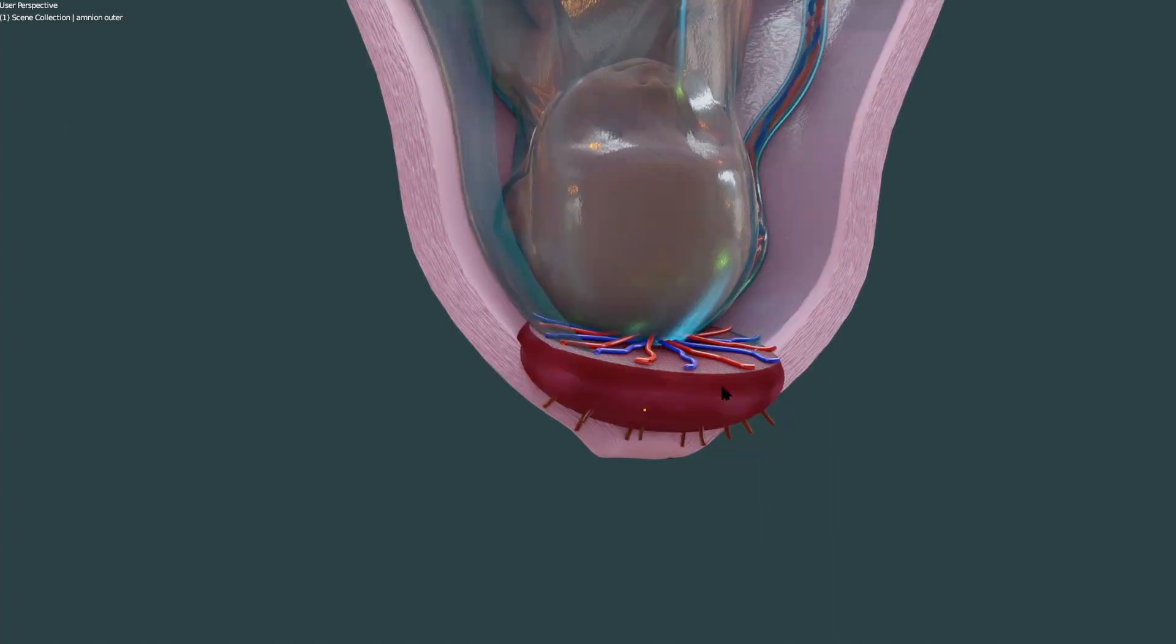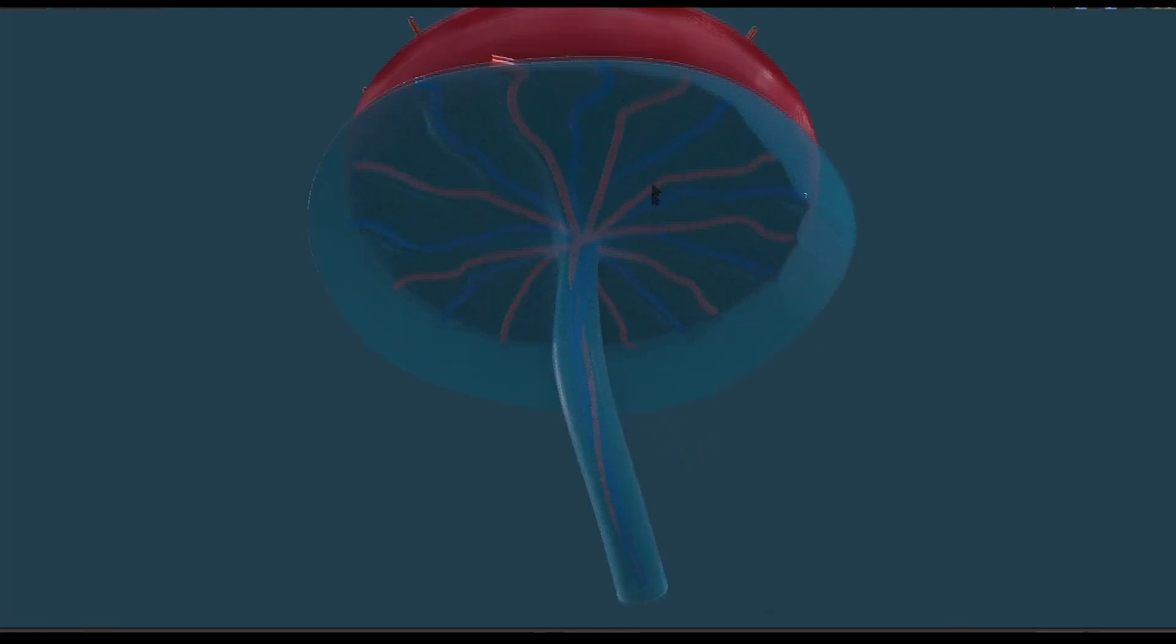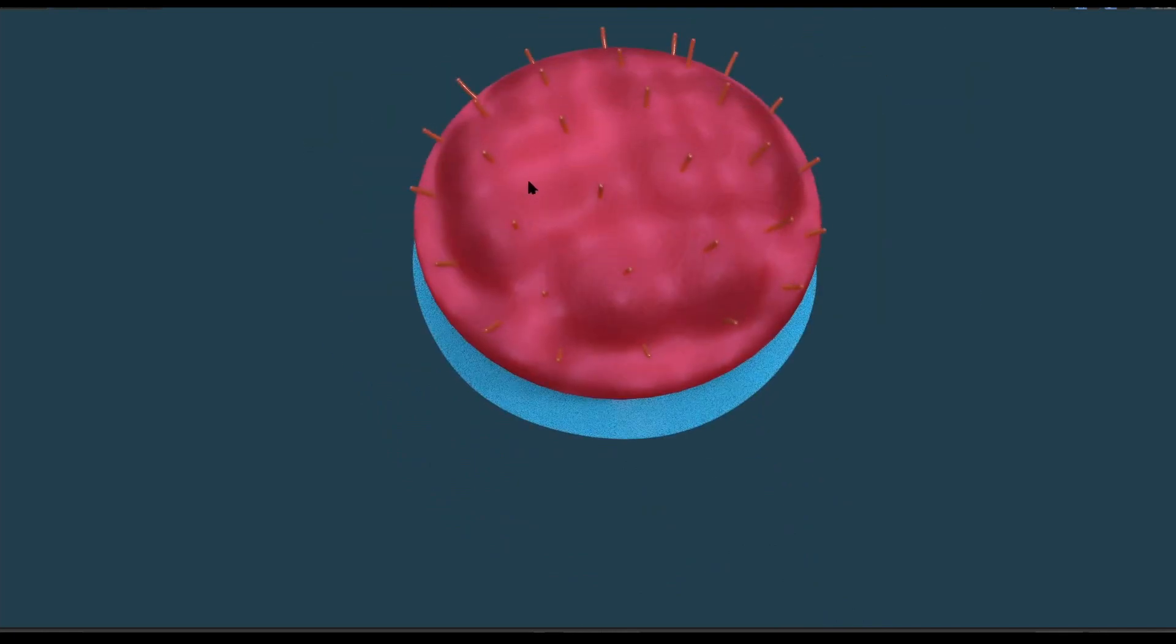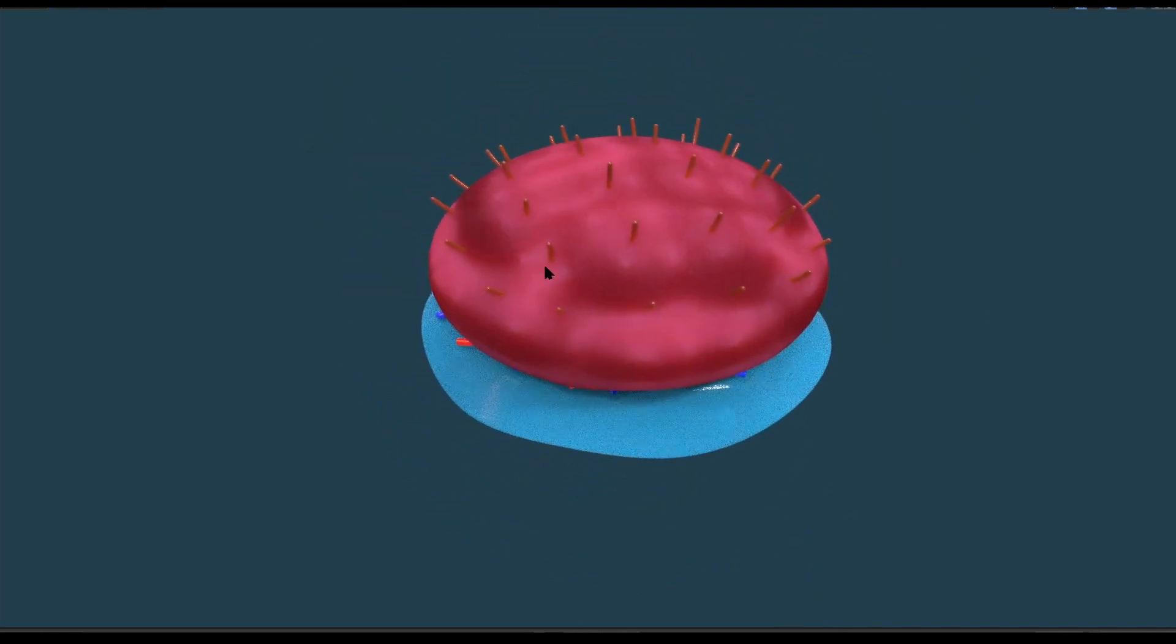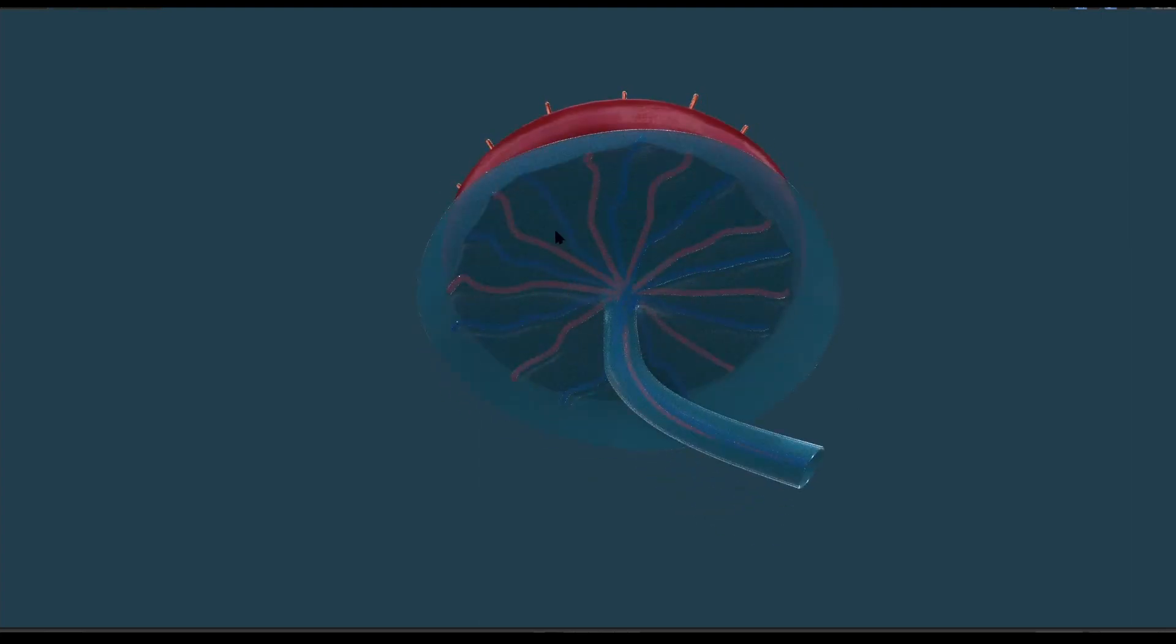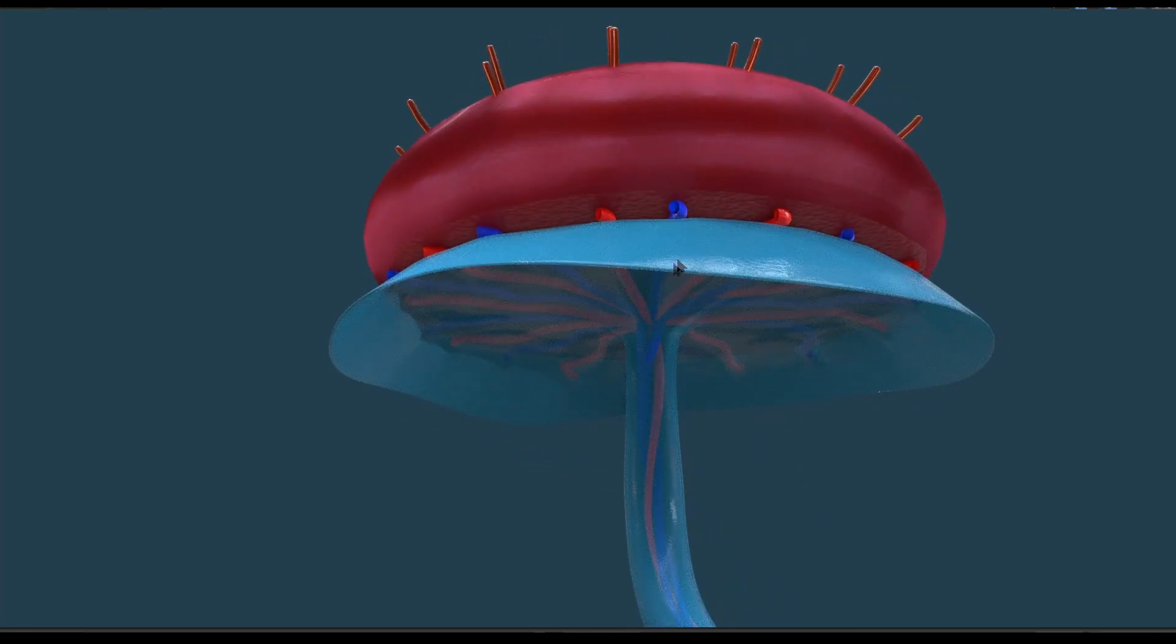Now let's see the structure of an isolated placenta only. Here is the structure of placenta. Here is the fetal part and here is the maternal part, and this maternal part as you must be knowing is made up of decidua basalis and chorionic frondosum.